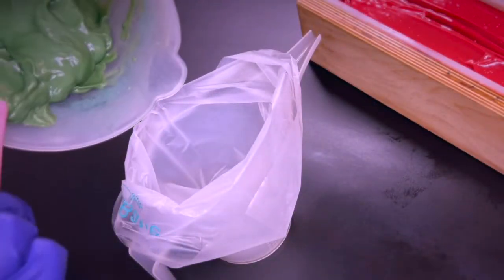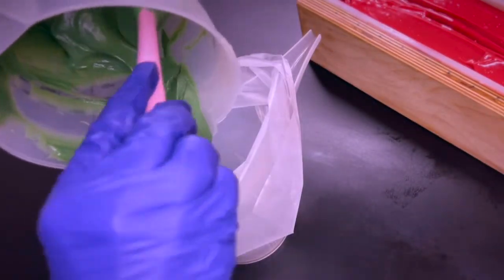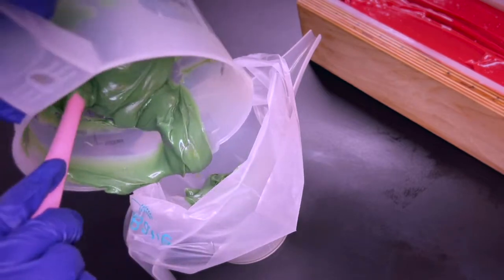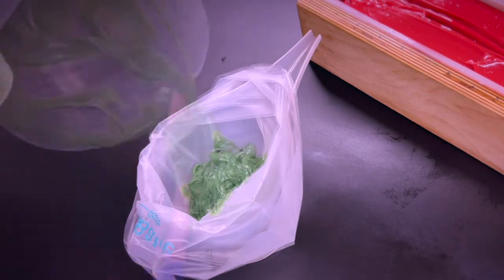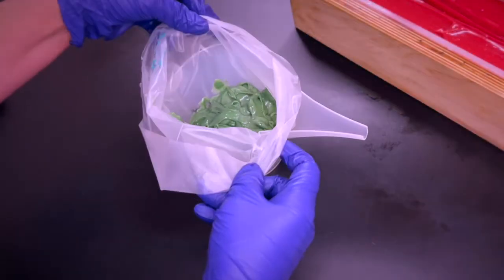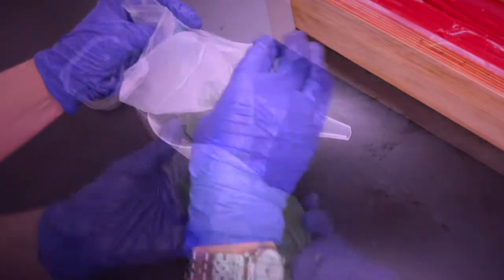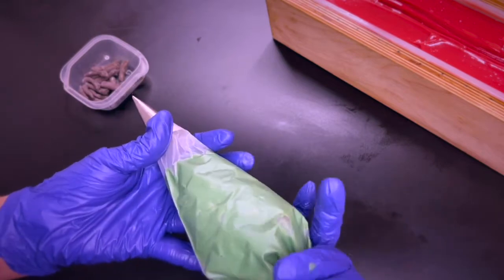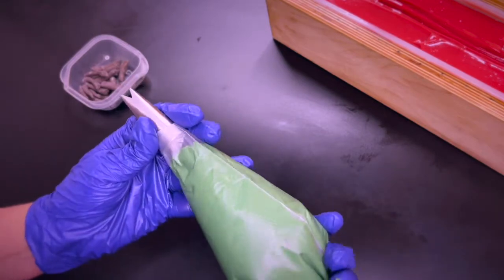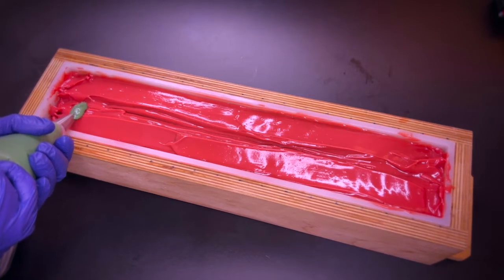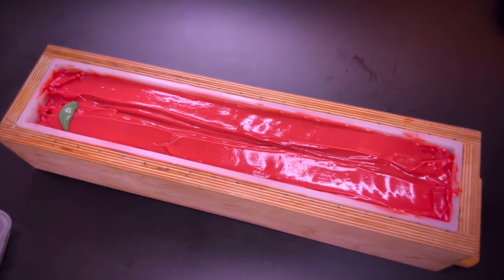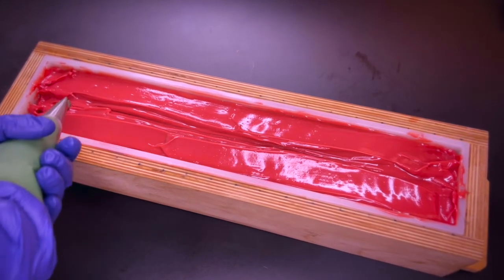In the meantime, our green portion is at piping consistency and I'm going to transfer this to the piping bag. We are ready to go, so I'm going to try piping some leaves across the soap mold. I'm not a specialist for piping leaves and flowers though. I will be happy if the leaves are going to be recognizable at all. Okay, this is not so bad.